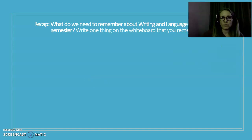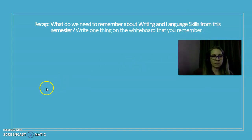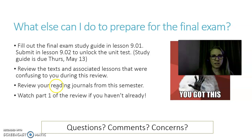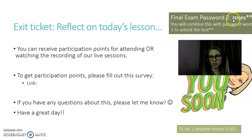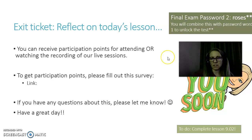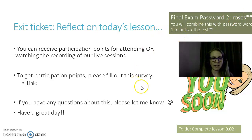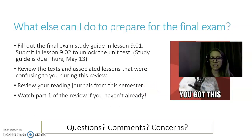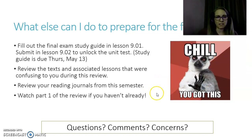You'll review unit 4 for this. Your final exam password: the second part is "roses." The first part was given in the first half of the review. Put those together along with the study guide and you will have what you need to unlock the test. Good luck to everybody — take a look at this page, you can pause it and see what all needs to happen. You've got this!